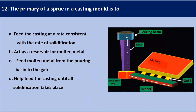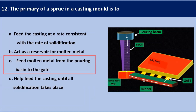Next question: the primary office of sprue in a casting mold is — as shown in this diagram, the molten metal flows from the pouring basin to the gate. The primary function of a sprue in the casting mold is to feed the molten metal from the pouring basin to the gate. Our answer is C.